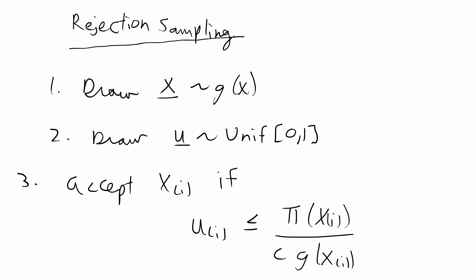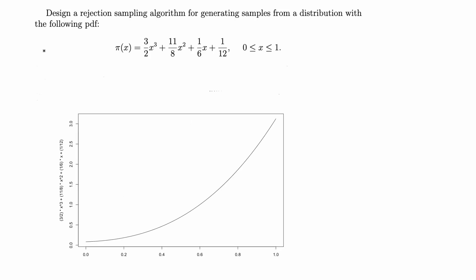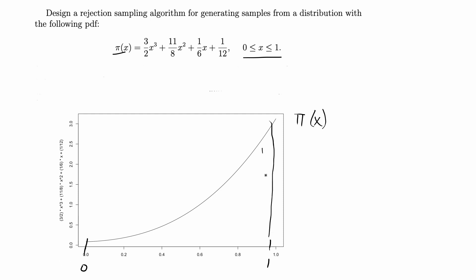Now let's do an example. The task is to design a rejection sampling algorithm for generating random samples from a target distribution π(x) — a third-degree polynomial with support from 0 to 1. This is not a well-known distribution, so it would be difficult to sample from directly. I plotted the PDF of π(x) in R over the support from 0 to 1. This is the distribution we want to randomly sample from.